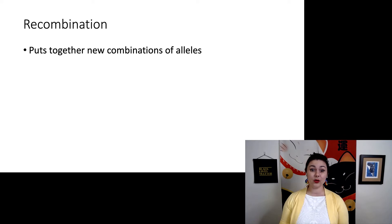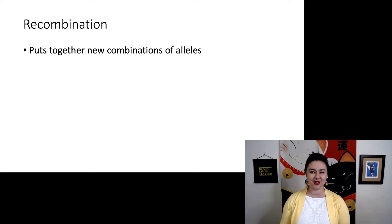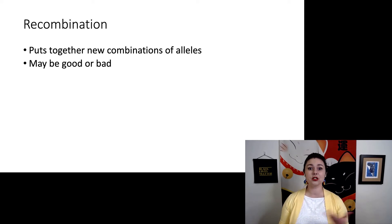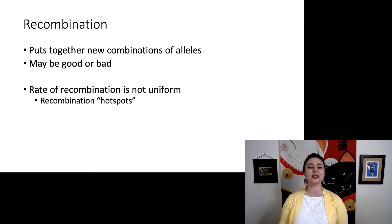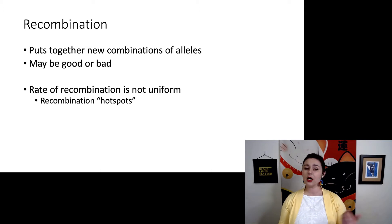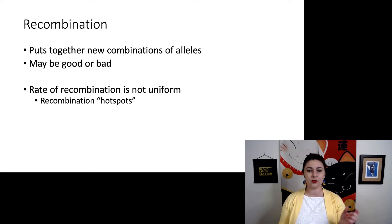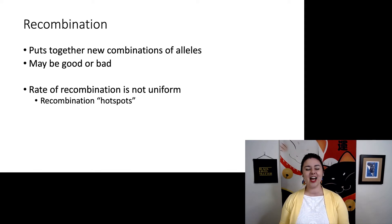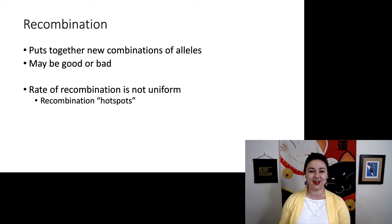Recombination is one way to create new variants and discard unfavorable ones. It's really interesting because now we can put together new combinations of alleles — maybe alleles from different genes that work really well together. It might be good or bad, but it's one way to try out new variations which selection can later act upon. The rate of recombination is also not uniform: there are particular hotspots on chromosomes where recombination happens very often, and other parts where it rarely occurs. Think of it as discrete chunks of chromosomes that we can swap back and forth.